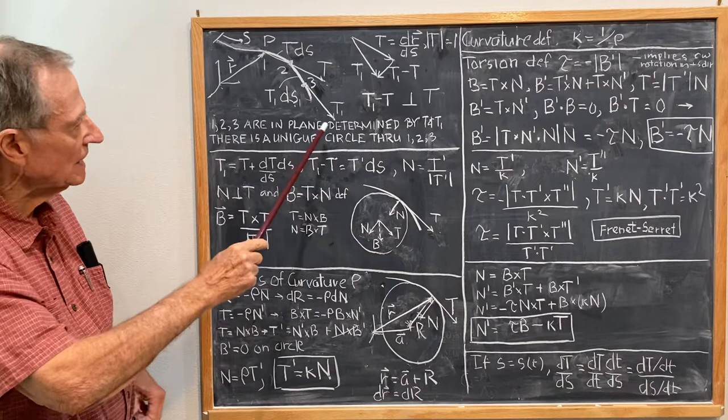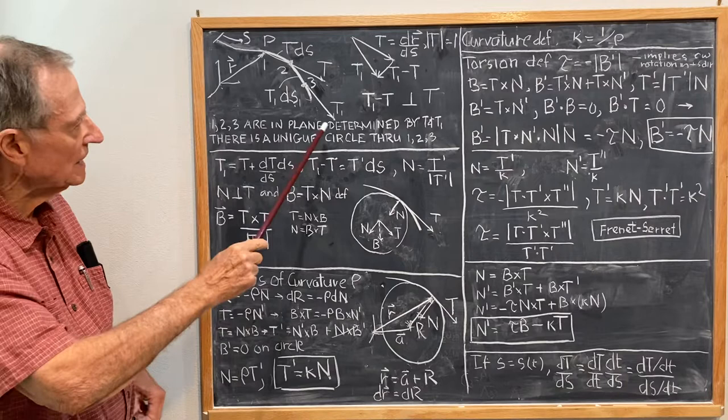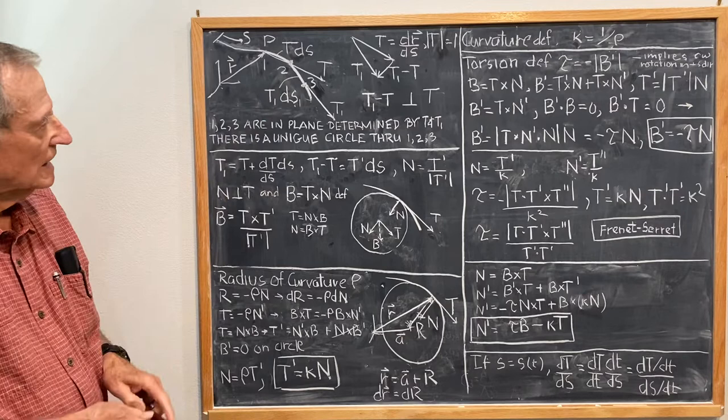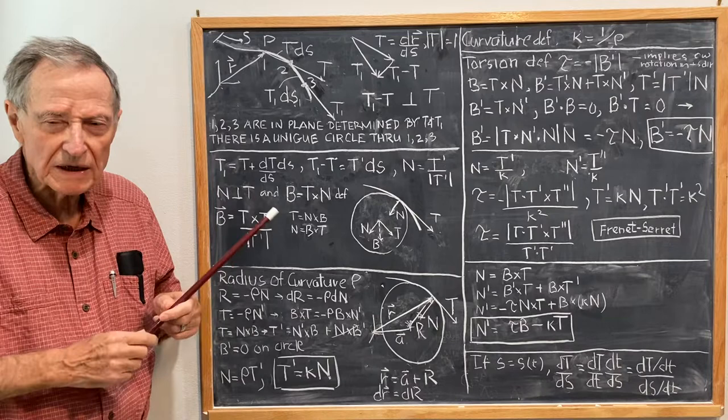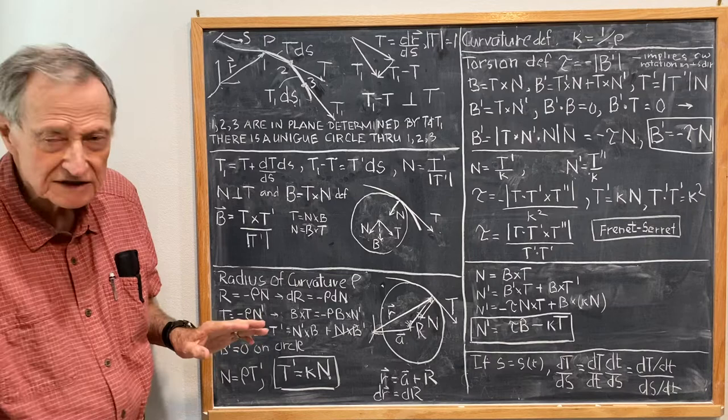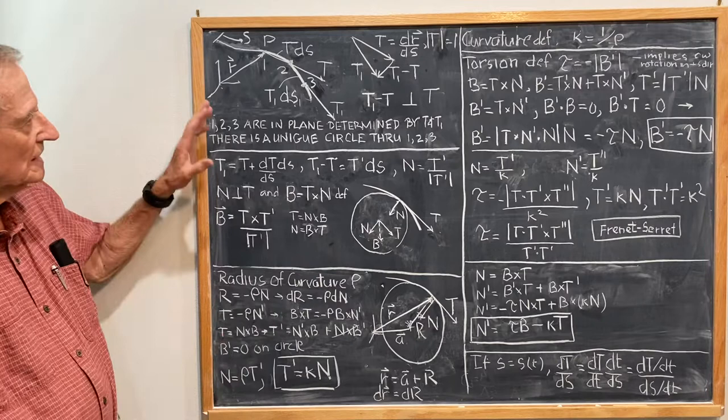Points 1, 2, and 3 are in the plane determined by T and T1. And since 1, 2, and 3 are in a plane through those points, they determine a unique circle to those points 1, 2, and 3. That's basically the geometry of the whole discussion.